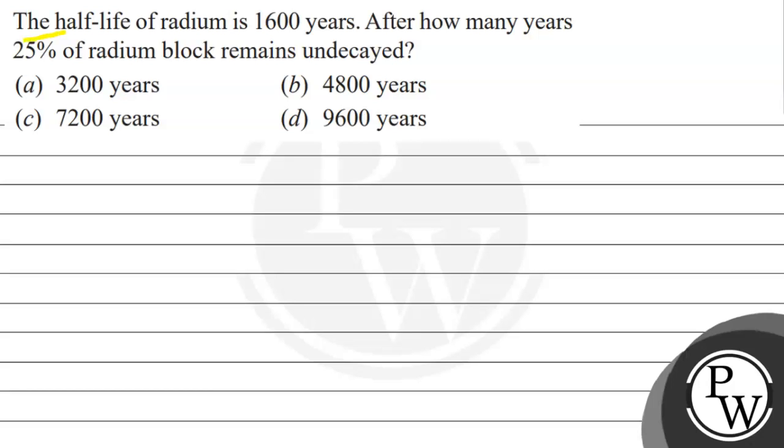Let's read this question. The question says that the half-life of radium is 1,600 years. After how many years, 25% of radium block remains undecayed? Options are 3,200 years, 4,800 years, 7,200 years, 9,600 years.